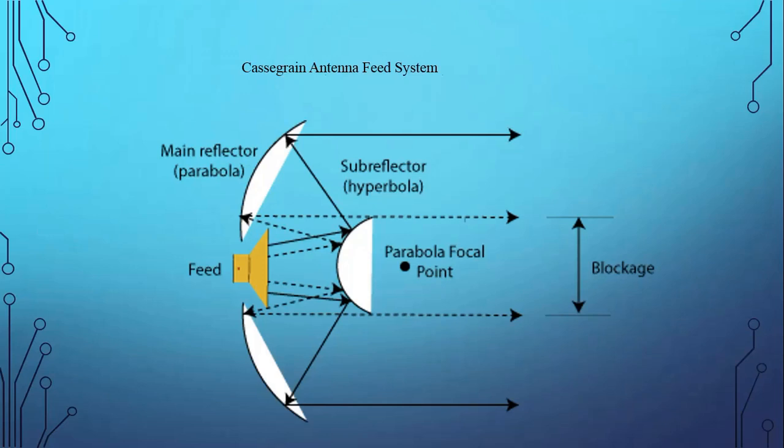The sub-reflector is otherwise called the secondary reflector because it receives the signal from the horn feed and re-radiates the electromagnetic wave towards the parabola — that is why it is called the secondary reflector. In this Cassegrain feed antenna system, the hyperbola reflector is placed at the focal point of the parabola reflector.